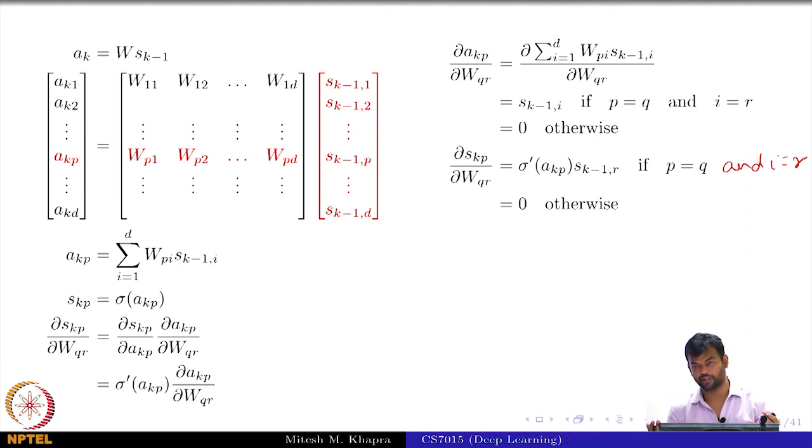So that's where we will end today. We have finished recurrent neural networks, and the next thing that we're going to look at is LSTMs and gated recurrent units. Thank you.